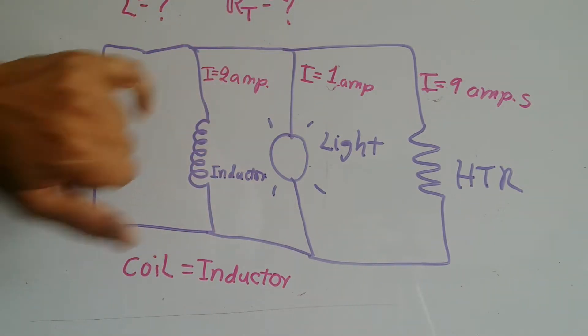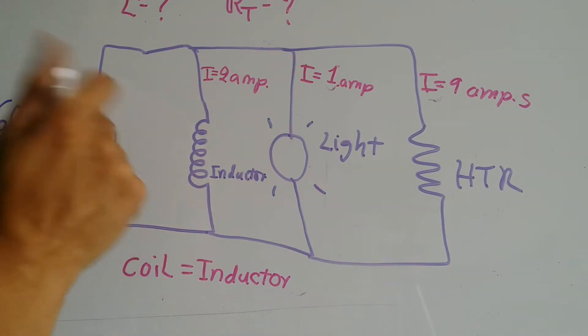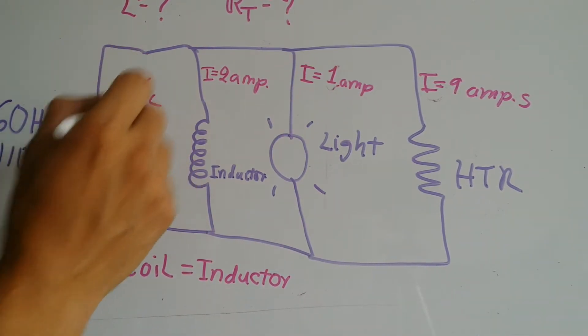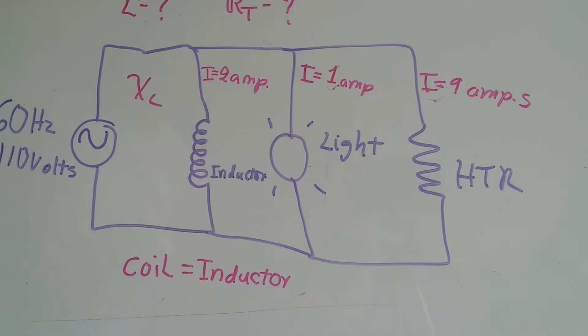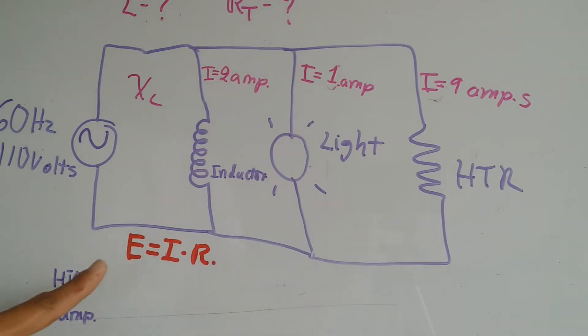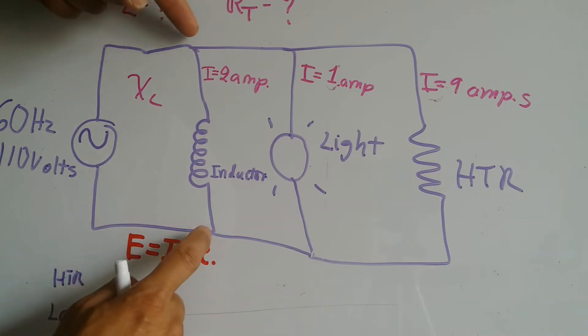We're going to find out the inductor value and the resistance of the total circuit. For that we're going to need to find out the resistance of this one, which is not called resistance but it's called reactance, but it is treated as resistance once we get that value. Here I wrote Ohm's law: E equals I·R.